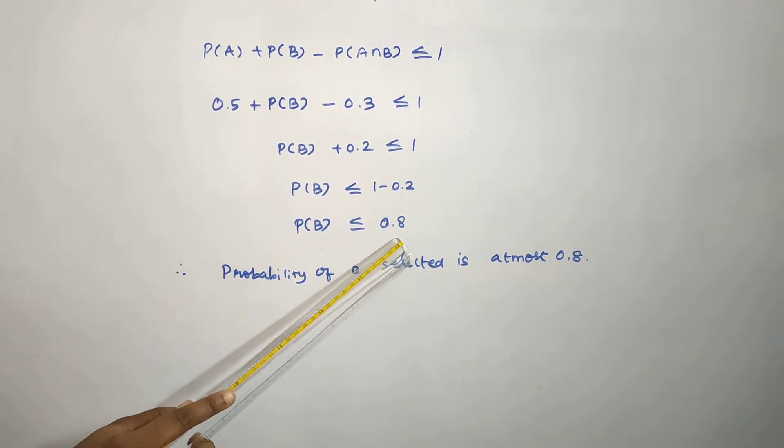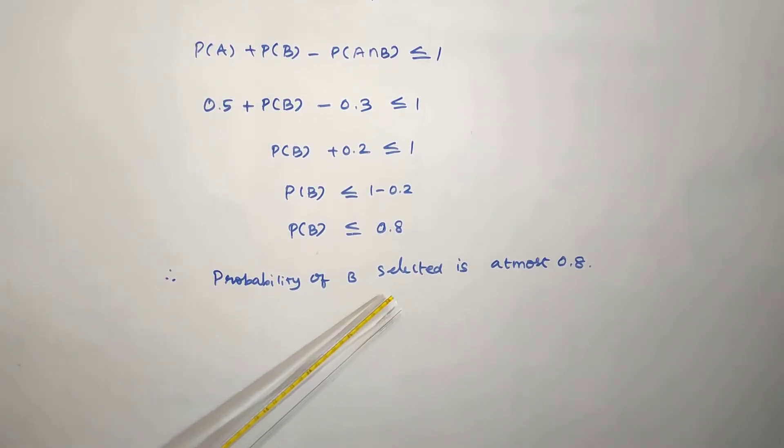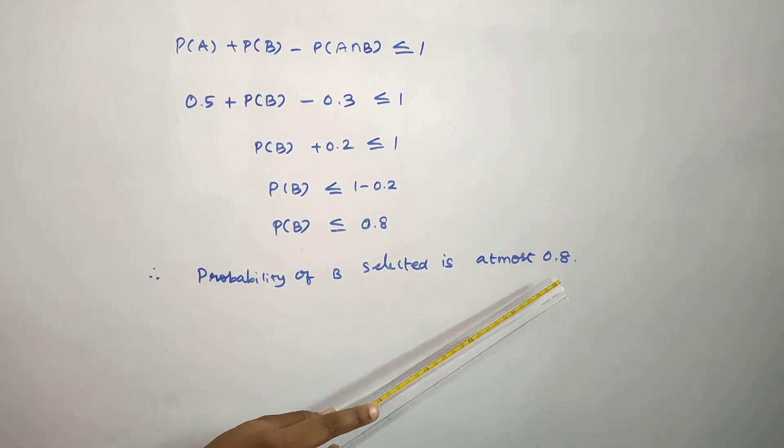0.8 is 0.8. Probability of B selected is at most 0.8.